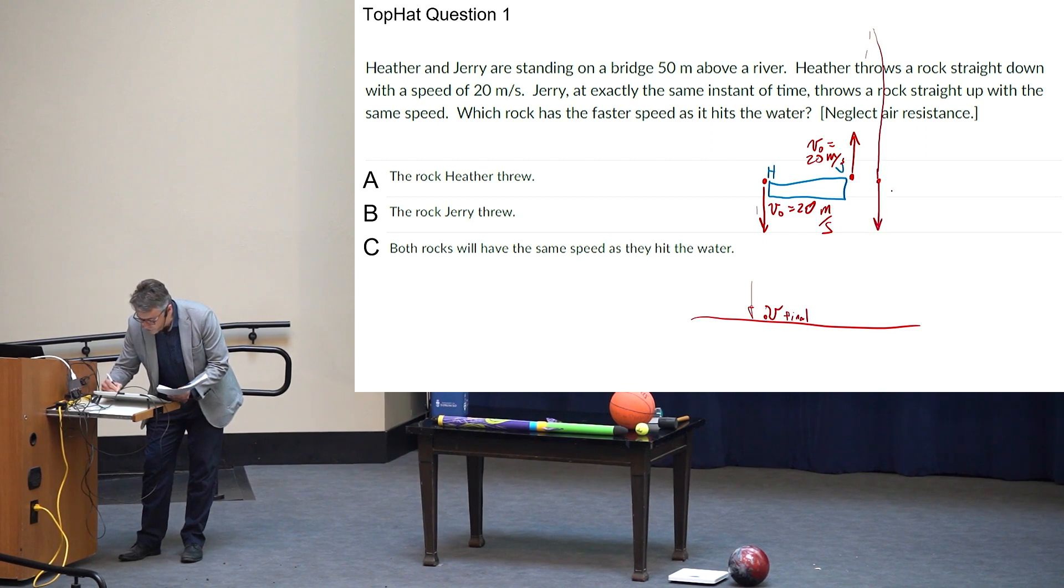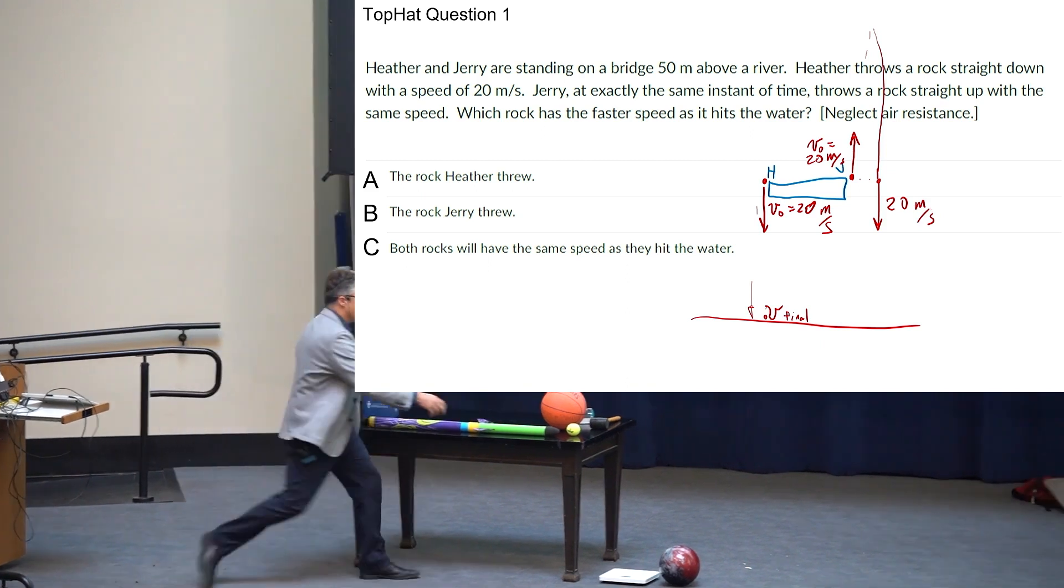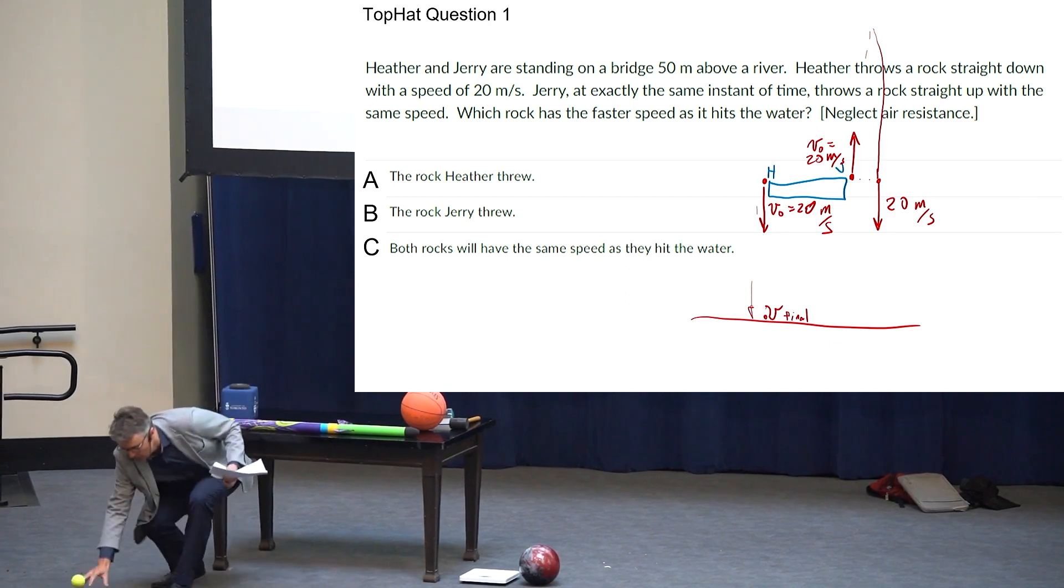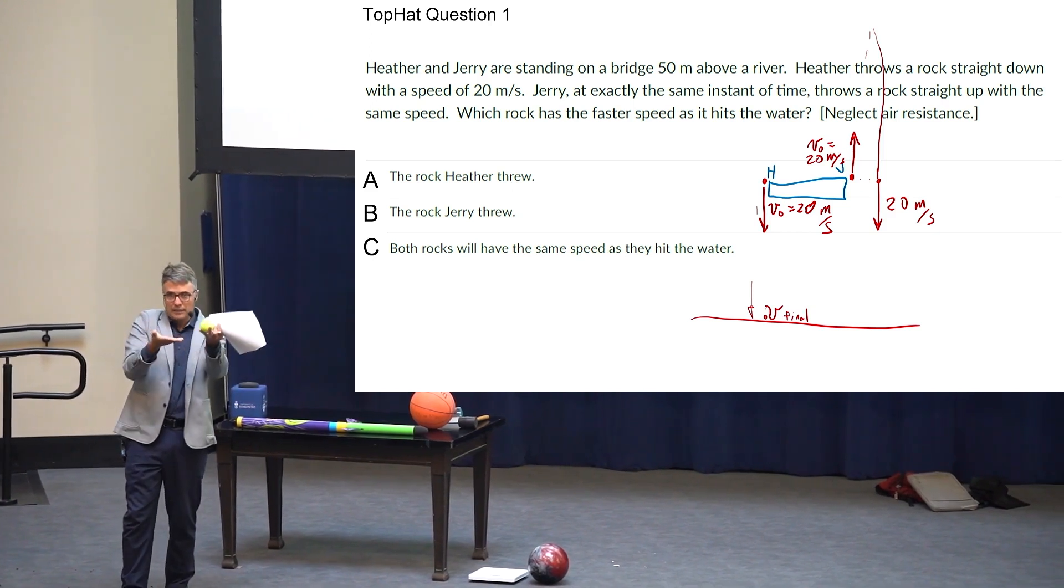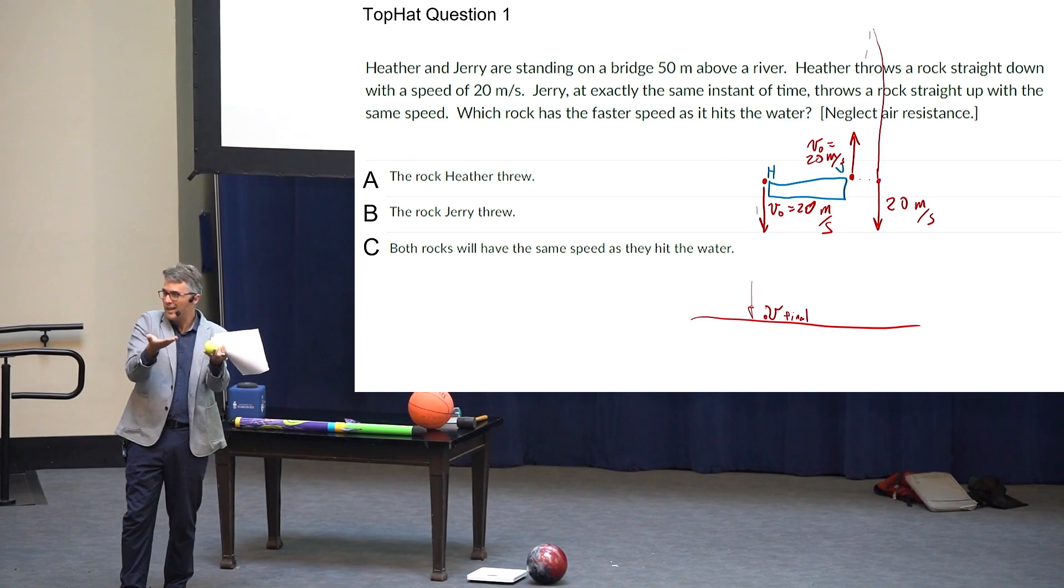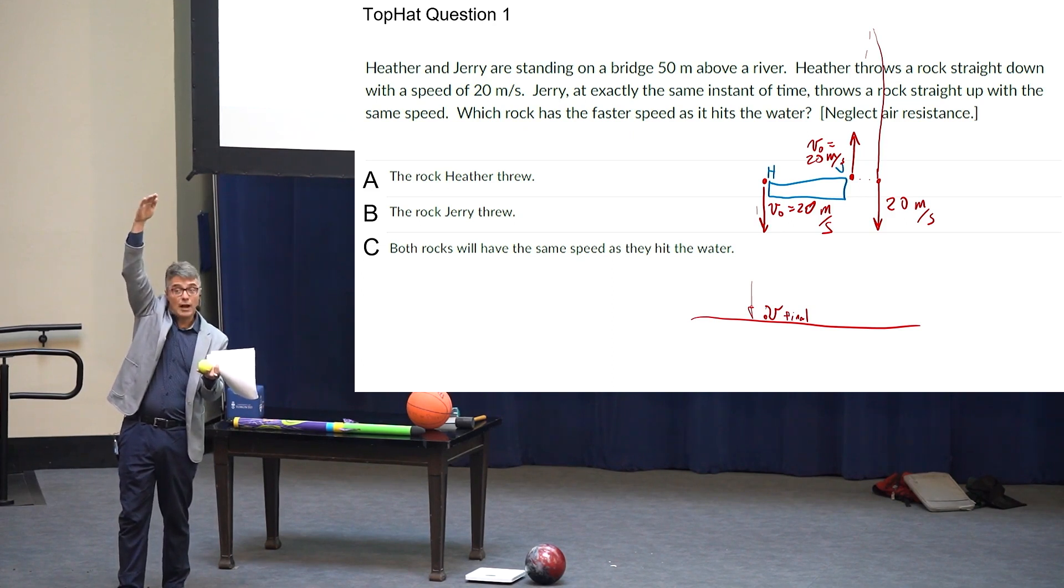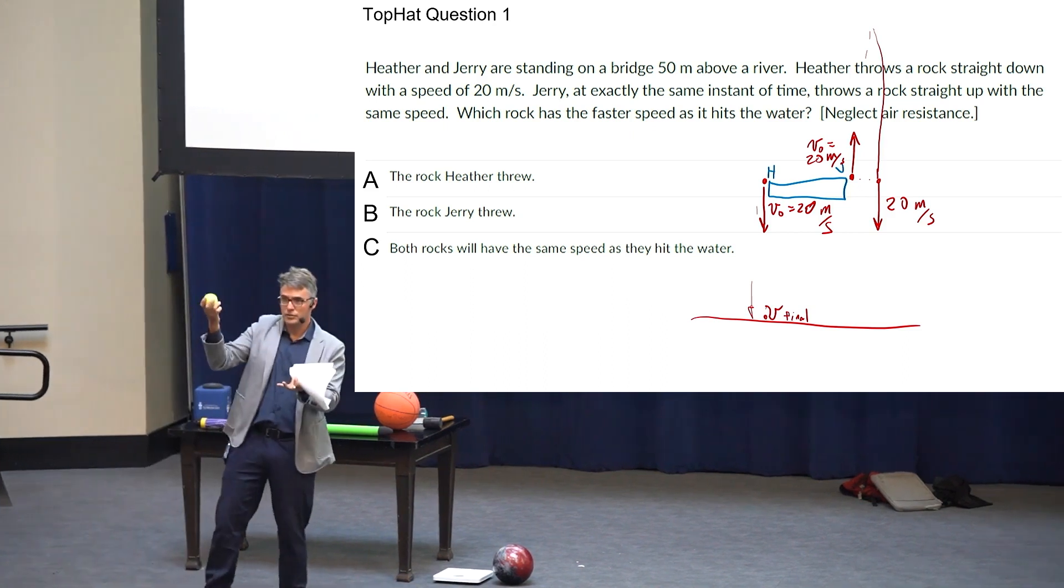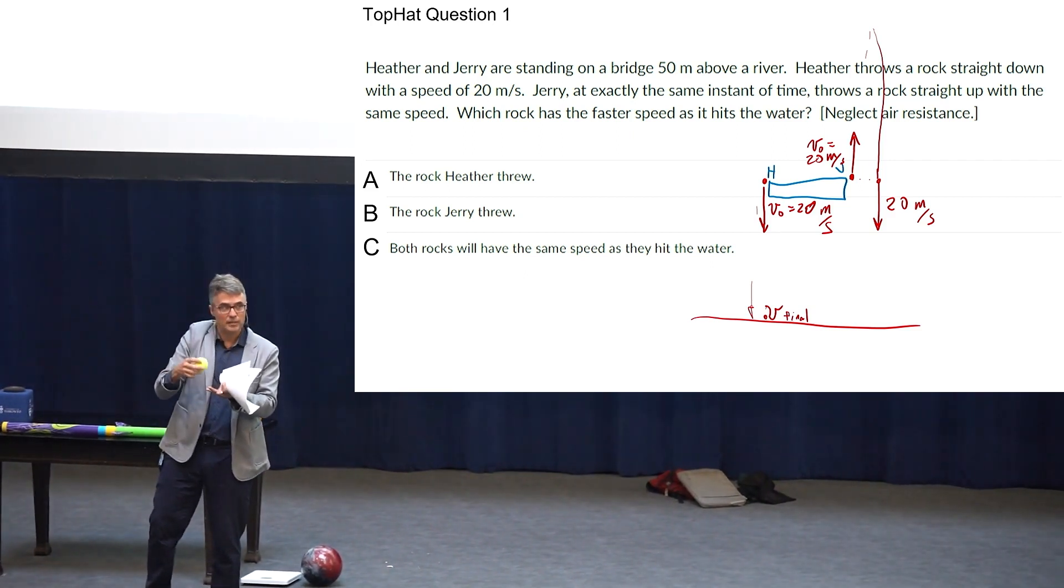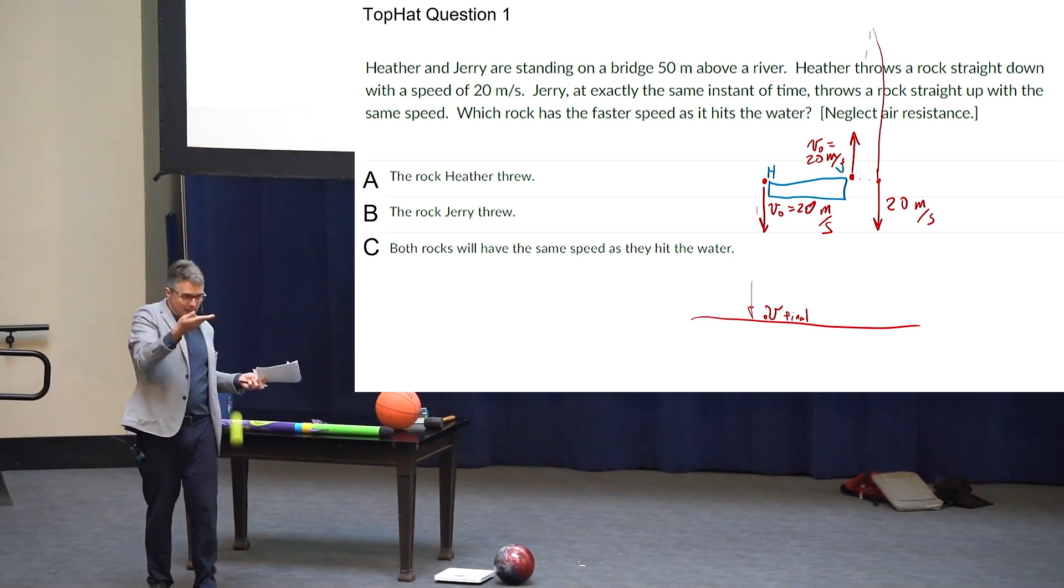There's a few different ways of looking at this. Sometimes I think of this as a conservation of energy idea. Let's put Heather over here and Jerry over here. They both have a rock and they both throw it. This one has V initial is 20 meters per second downwards, and this one has V initial is 20.